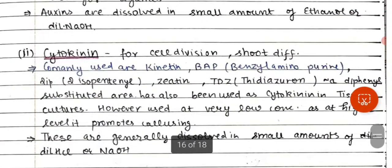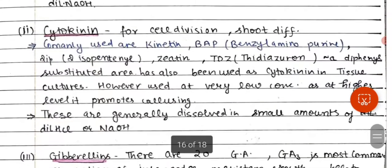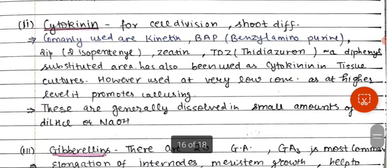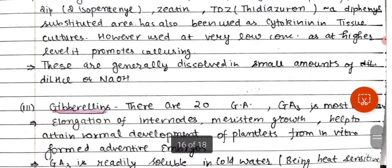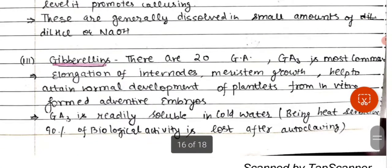Auxins are dissolved in a small amount of ethanol or dilute sodium hydroxide (NaOH). Cytokinins promote cell division and shoot differentiation, and they are generally dissolved in small amounts of dilute HCl or NaOH.